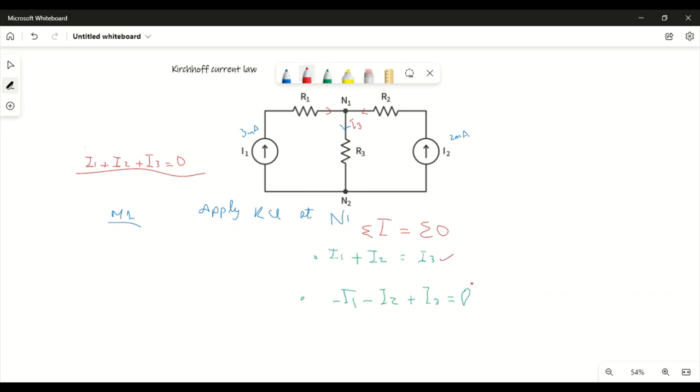Incoming, outgoing - these are the two methods. I prefer you to do this so that you don't have sign mistakes. Now let's start writing our source current values.